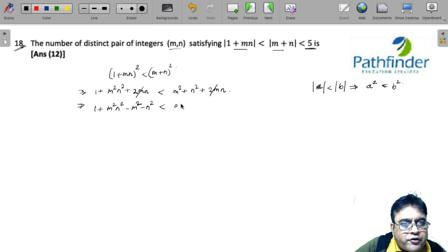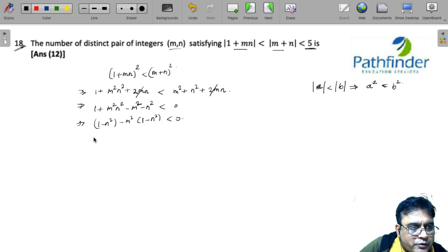We should remember that both of them are less than 5. Taking (1-n²) as common, we get (1-n²)(1-m²) < 0.